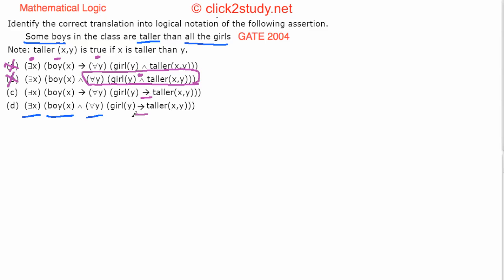So the correct choice should be from the two remaining options — one uses implication and the other uses AND for the existential part. If 'boy(X)' implies 'for all Y, girl(Y) implies taller(X, Y),' that is one option. The correct option, however, uses AND.